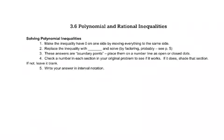In 3.6 we'll look at how to solve inequalities with polynomials and rationals. In order to do this we have to start by making the inequality have zero on one side, then we're going to replace the inequality with an equal sign and solve, factoring probably. These answers are called boundary points. We'll put them on a number line as open or closed dots, then we need to check a number from each section in the original problem. If it works we'll shade it, if it doesn't we'll leave it blank, and then we'll write our answer in interval notation.